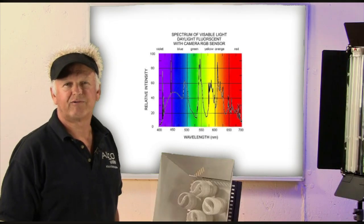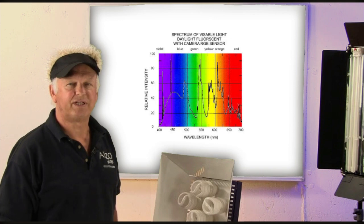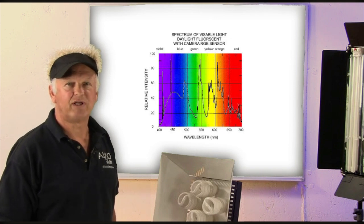Unfortunately, mercury vapor also produces a narrow band green light as well as ultraviolet.